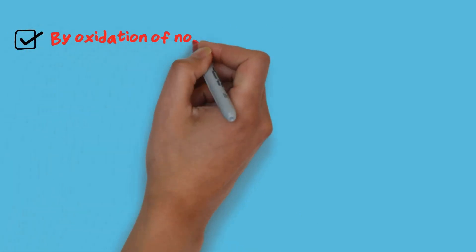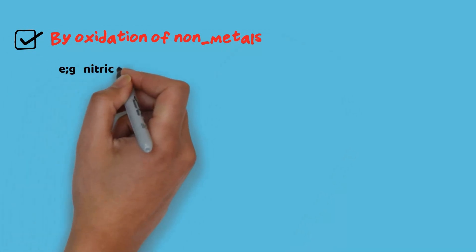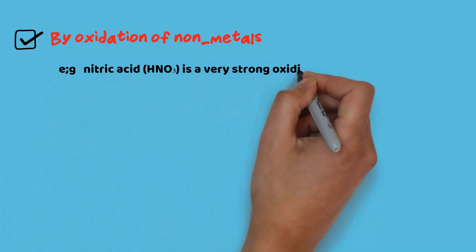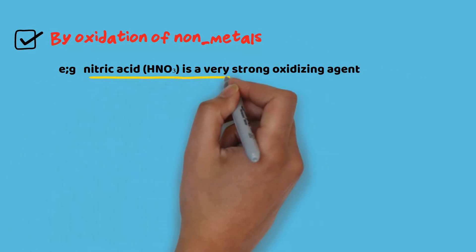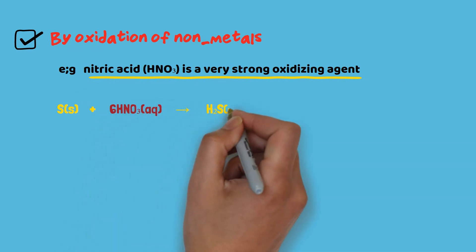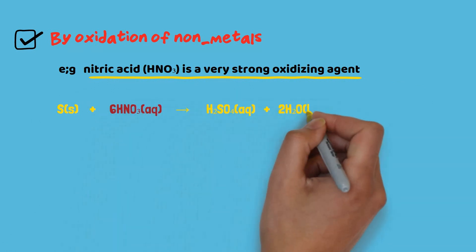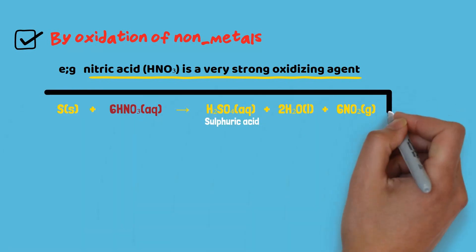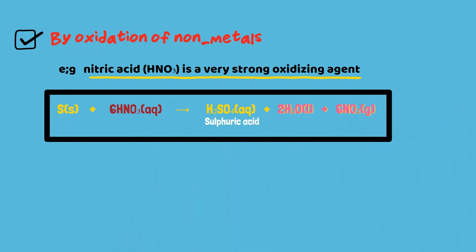Acids can also be obtained by oxidation of non-metals. For example, nitric acid is a very strong oxidizing agent. It reacts with sulfur to form sulfuric acid along with the formation of water and nitrogen dioxide.